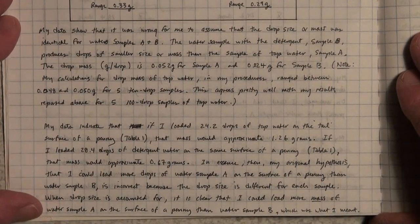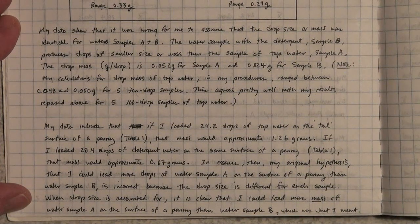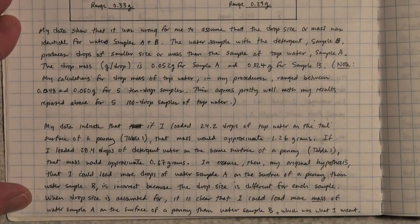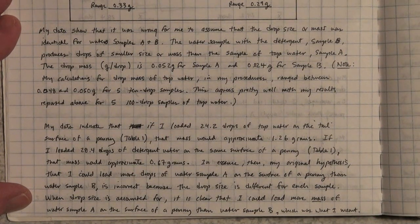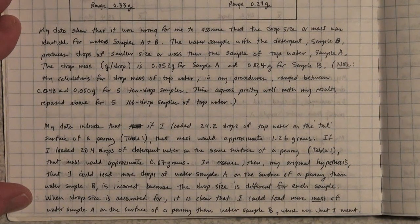My data indicate that if I loaded 24.2 drops of tap water on the tail surface of the penny, as in Table 1, that mass would approximate 1.26 grams. If I loaded 28.4 drops of detergent water on the same surface of the penny, in Table 1, that mass would approximate 0.67 grams.